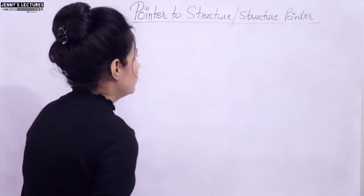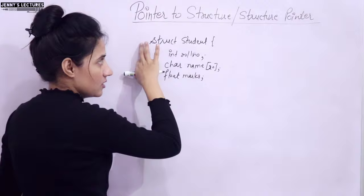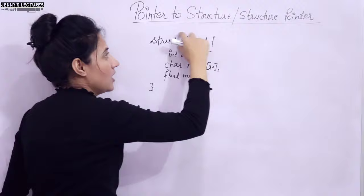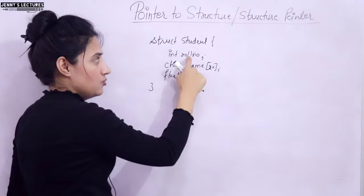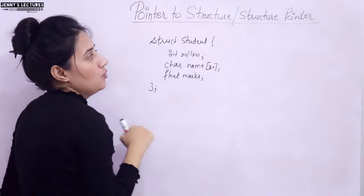I am going to take the same example we discussed in previous videos - struct student. This is the structure we have defined. You can put the curly braces here or here. This is the definition of the structure. We have defined our data type because a structure is a user-defined data type. So this complete 'struct student' is a data type containing three structure members having different data types.